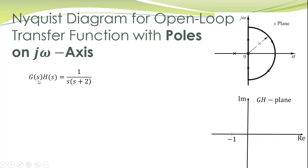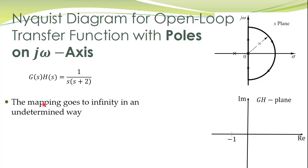We have another transfer function. The loop gain G(s)·H(s) is given by this relation. The procedure to apply the Nyquist criteria to study closed loop stability is to map this contour into the GH plane. However, there is a difficulty: one pole of the open loop system is at the origin. So if you substitute omega equal to 0, you get infinity. Therefore, you will not be able to count the number of encirclements because the graph reaches infinity in an undetermined way.